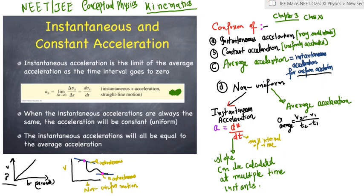In non-uniform motion, the average acceleration is different, instantaneous acceleration is different. There is no concept of constant acceleration.